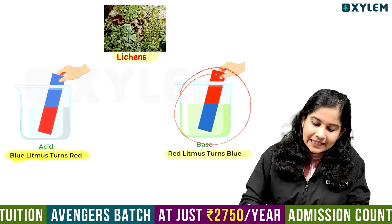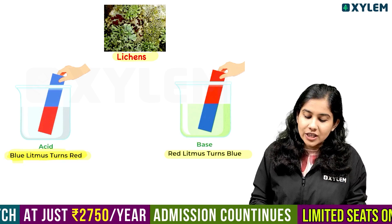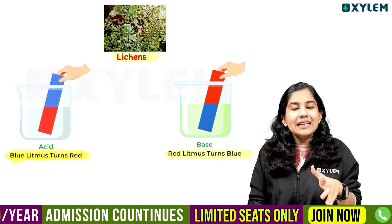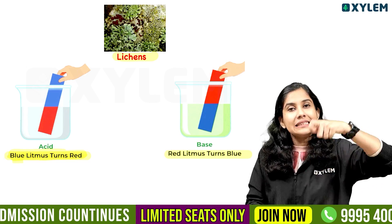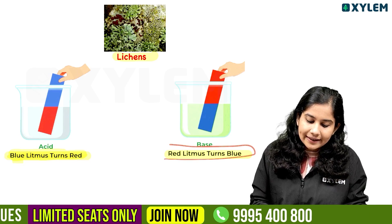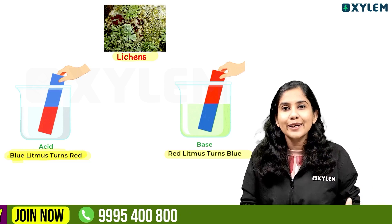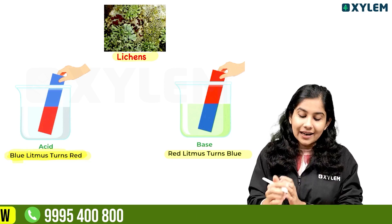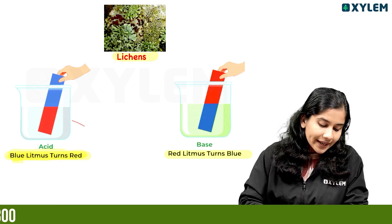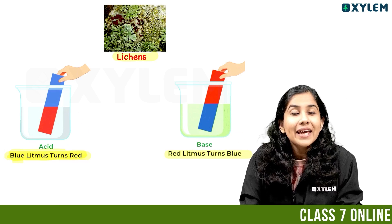Now, for base: if you dip the red litmus paper in a basic substance, it will change to blue. So in base, the color change is to blue. Red litmus paper turns blue in a basic substance.